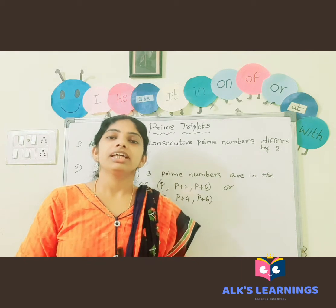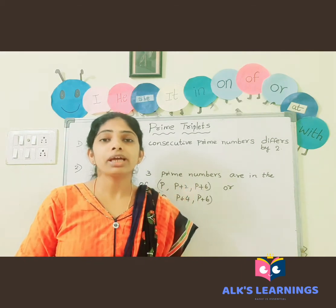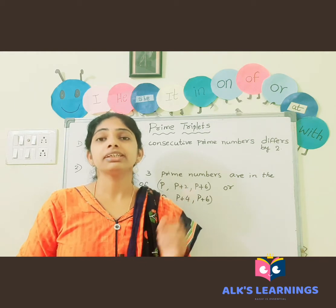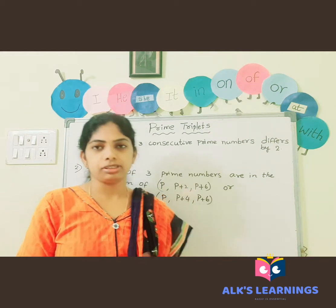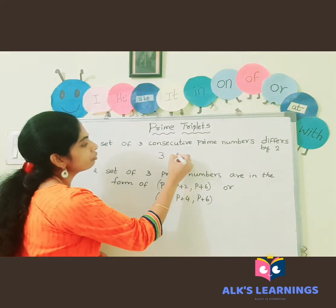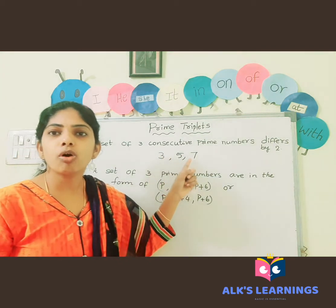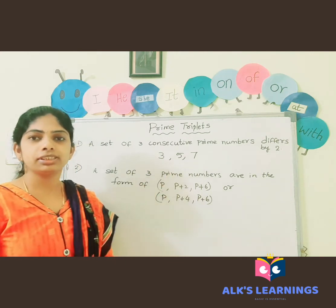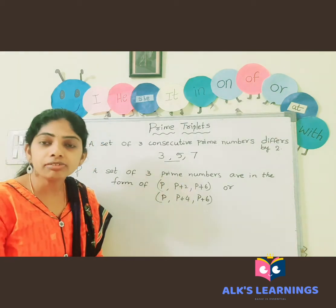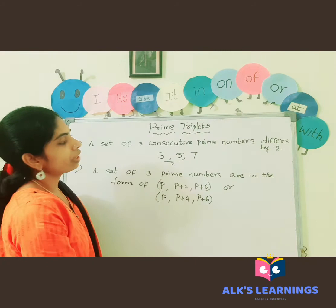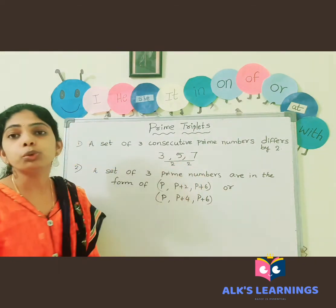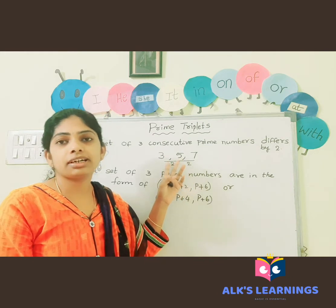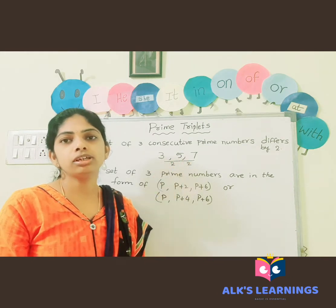What are prime triplets? A set of three consecutive prime numbers that differs by two. Let's take the example three, five, seven. These three are consecutive prime numbers, and the difference between each pair is two. The difference between five and three is two, and the difference between seven and five is also two. So three, five, seven satisfies the condition and is called a prime triplet.